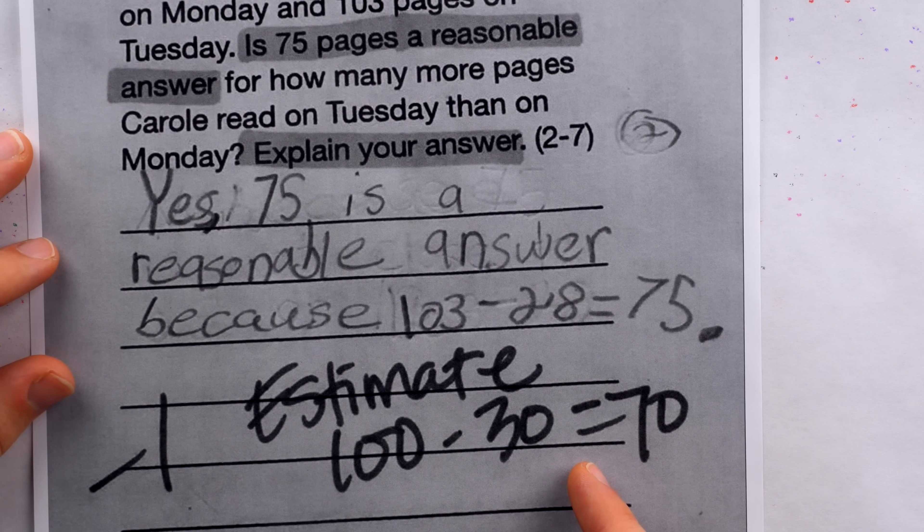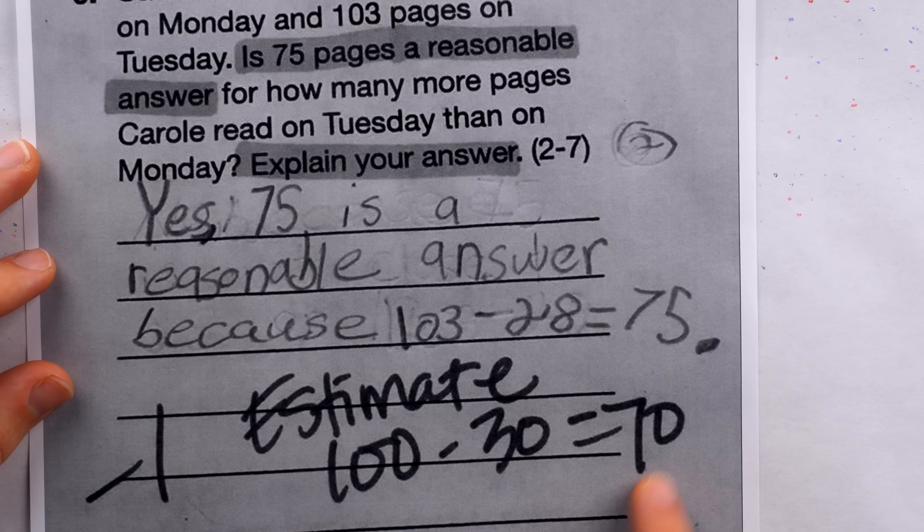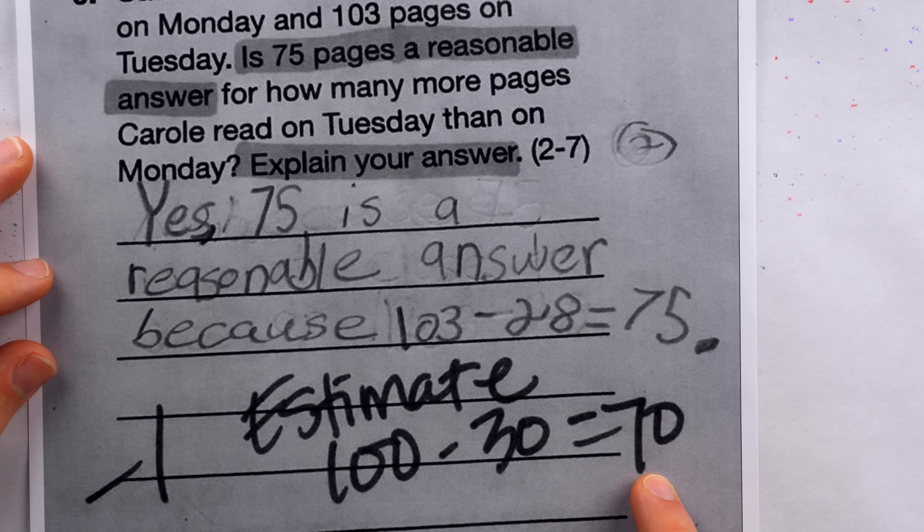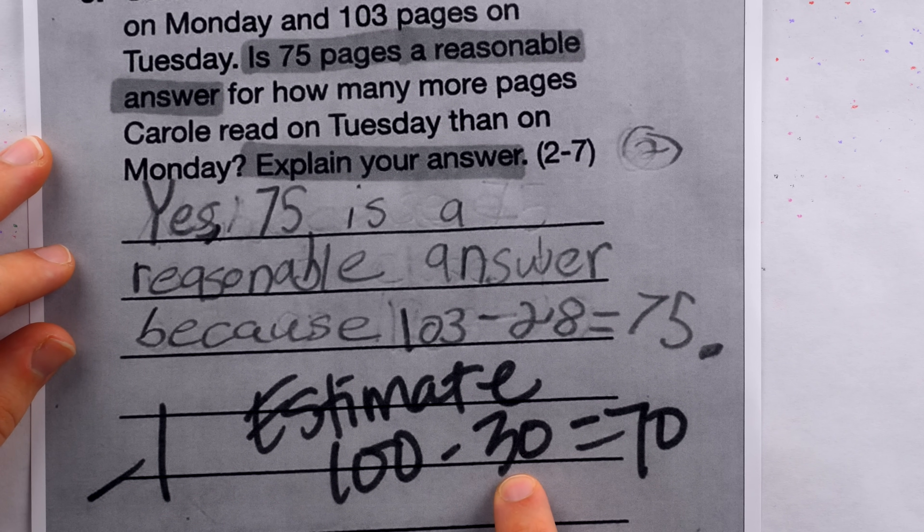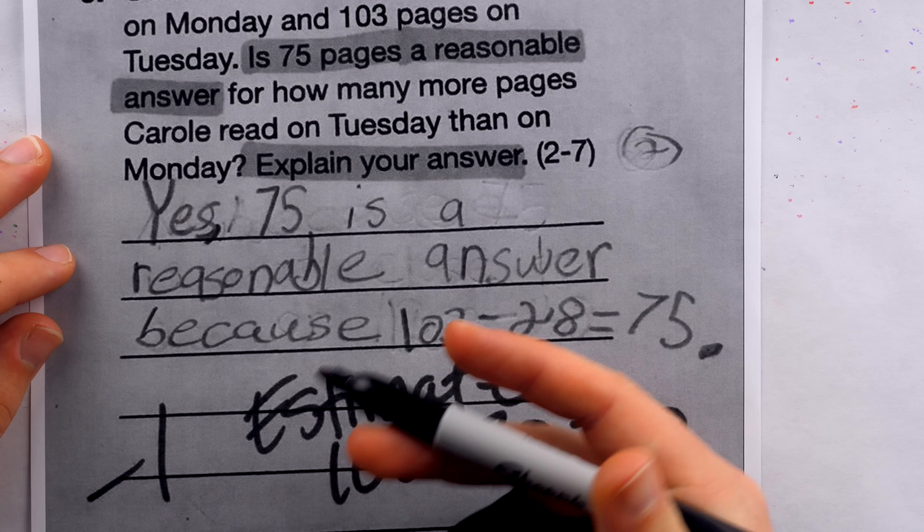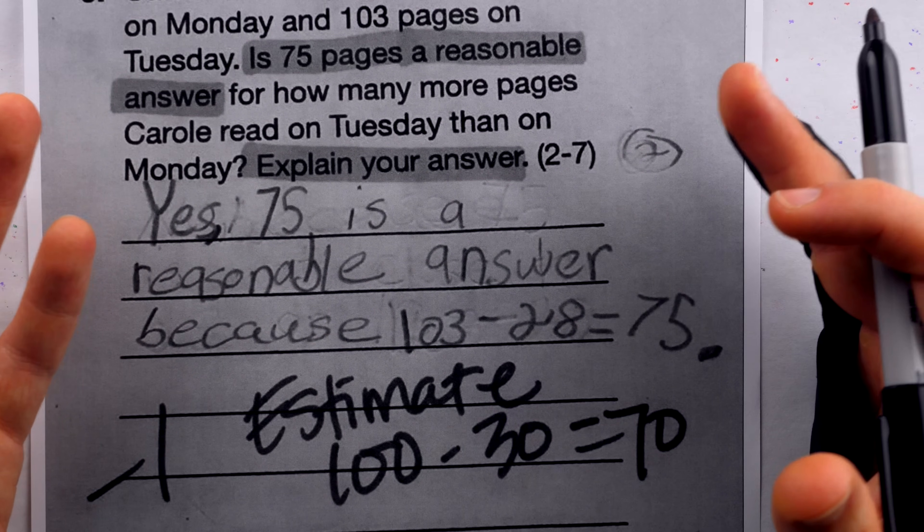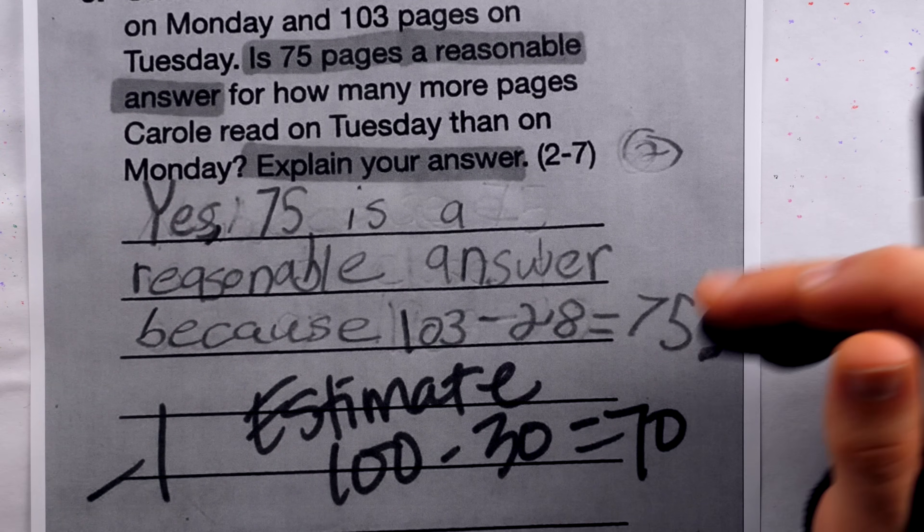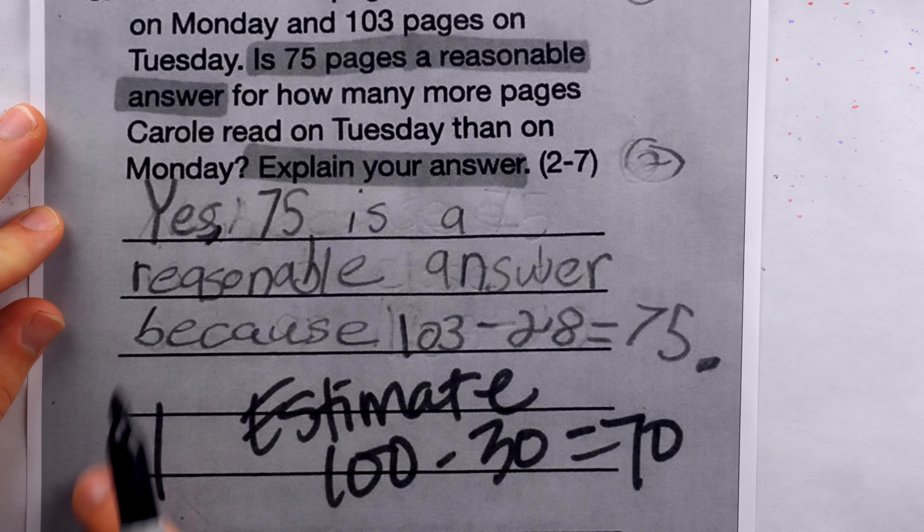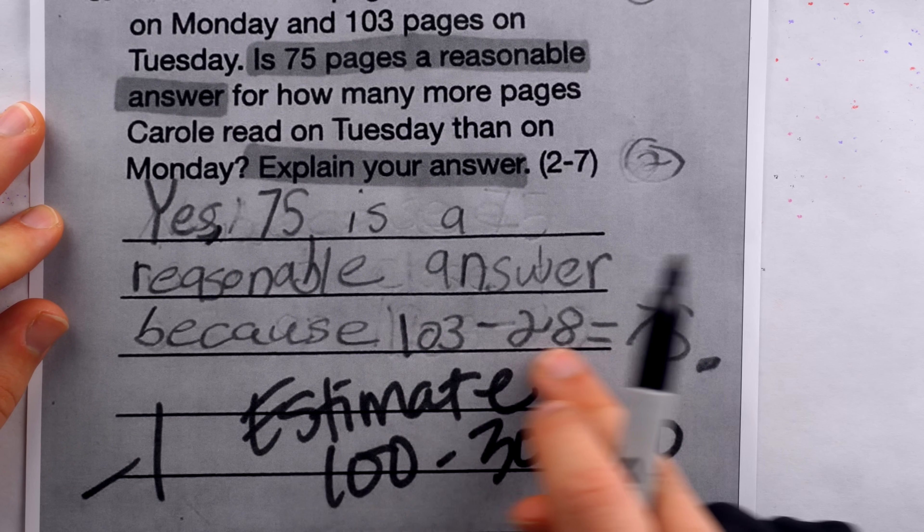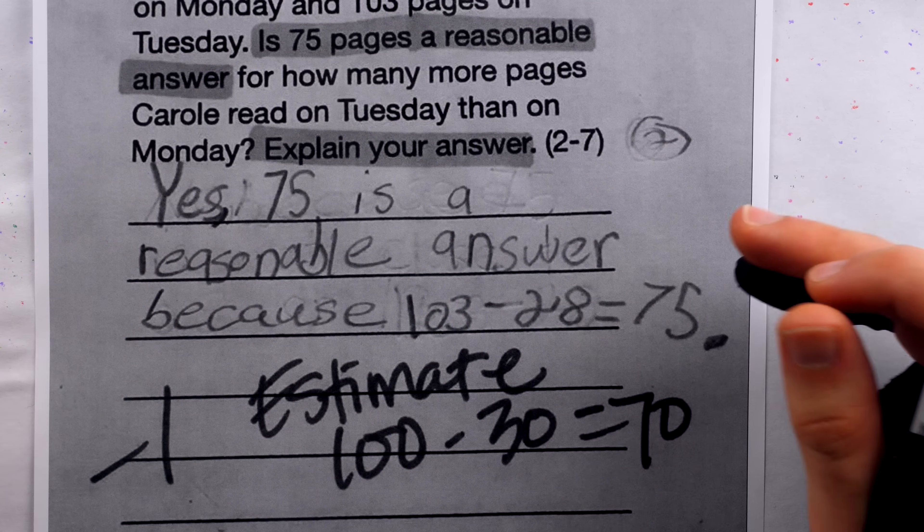So what is 75 pages, not a reasonable answer because they were supposed to estimate and get a less correct number? Is that the point? I mean, this seems a little hard to believe. Obviously, teachers grade things differently. And sometimes a teacher will grade something in a way that even they would disagree with if you brought it up to them and gave them an extra minute to think about it. But this seems crazy. I mean, we're really going to take away a point because their answer is exactly correct.